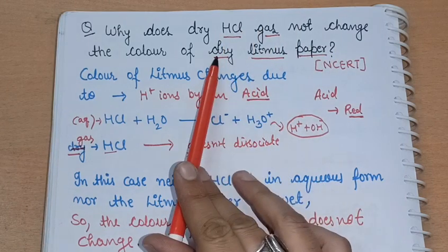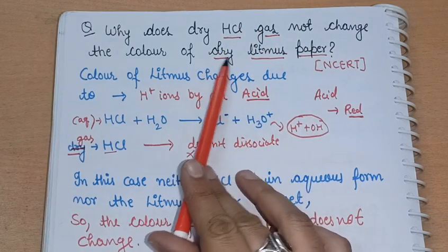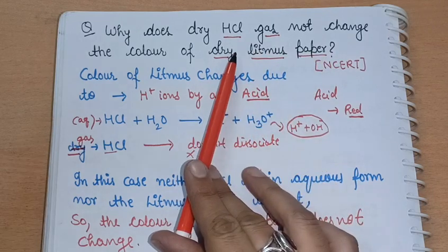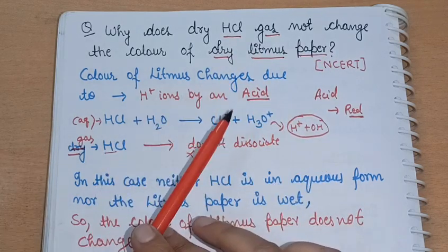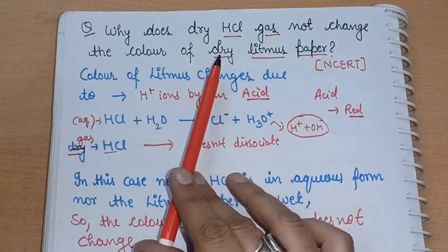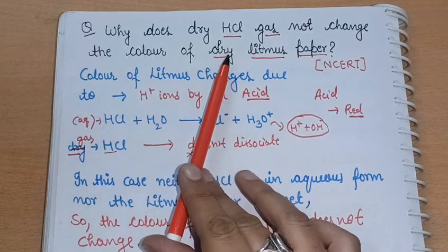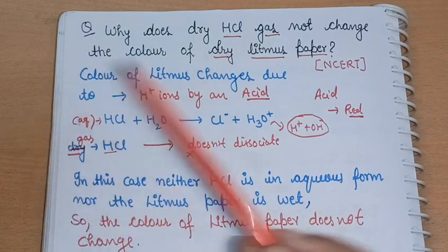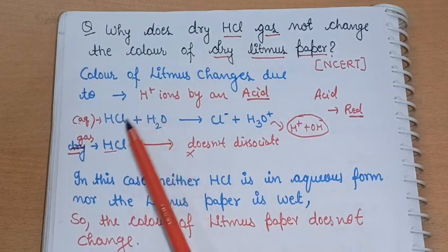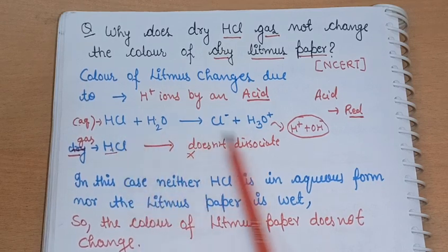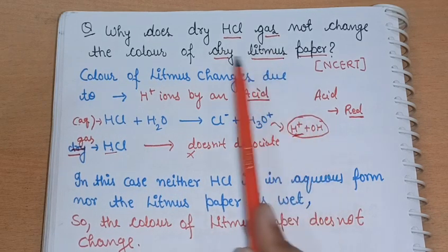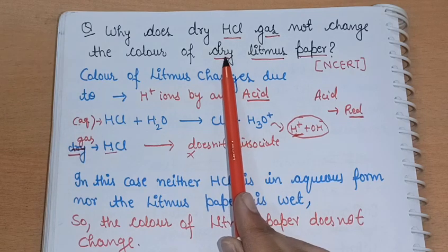One more thing — why is the litmus paper dry? If the litmus paper were wet, there would be a color change. Why? Because if the litmus paper is wet, there is water present. HCl would dissolve in that water, producing H⁺ ions as shown by the equation. But the condition here is that the litmus paper is dry, so this does not happen.